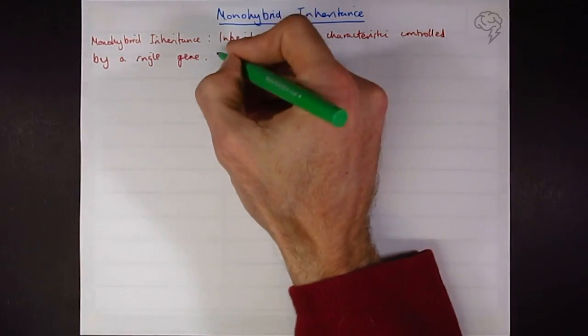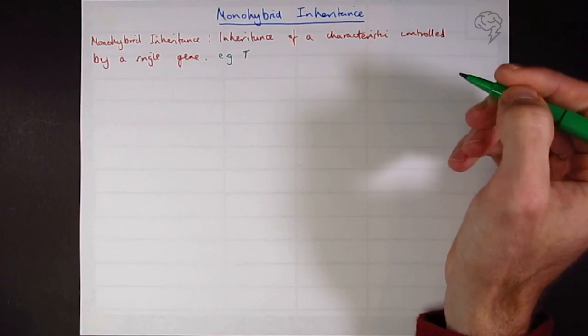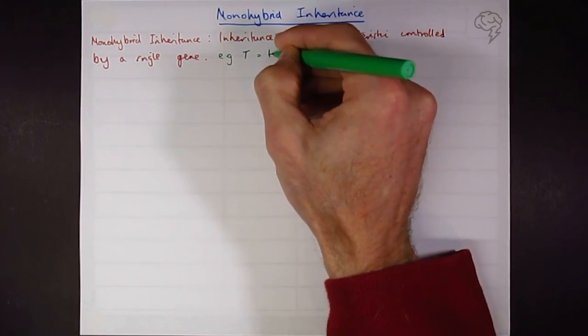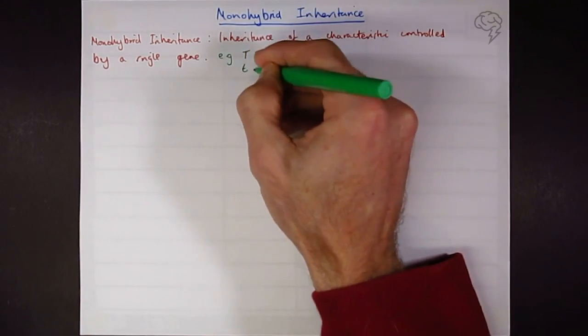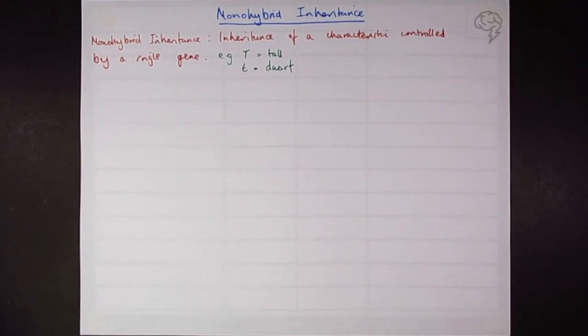So this could be in plants, something that I'm sure Mendel looked at. We have maybe a dominant allele T in plants for tall, and we could have the recessive allele little t for dwarf or small. And we're going to look at the examples based upon these alleles.